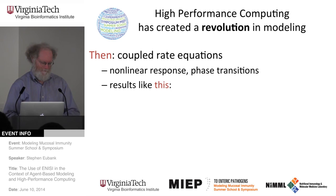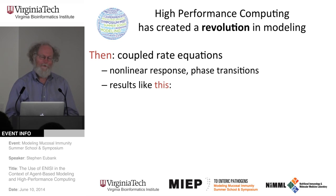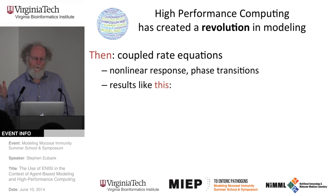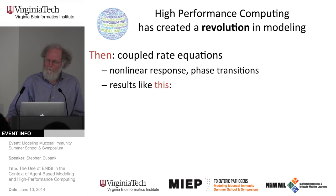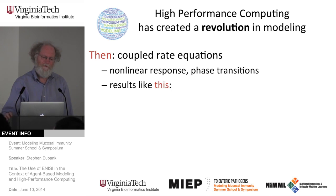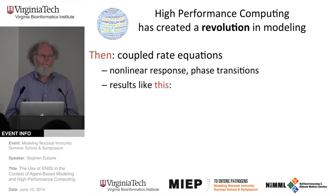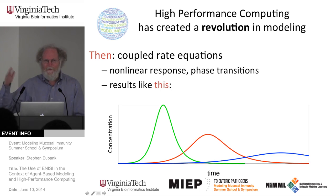I'm an advocate of agent-based modeling, but I don't see it as something completely separate from the long tradition of models. Agent-based models have created a real revolution in the world of modeling. Traditionally we've had things like coupled equations, ordinary differential equations — models of concentrations in a chemical system, compartments in an epidemiological model, or counts of different kinds of cells in the body. These models focused on non-linear responses where small differences get amplified, phase transitions, and the results are typically nice smooth curves describing population-level dynamics.